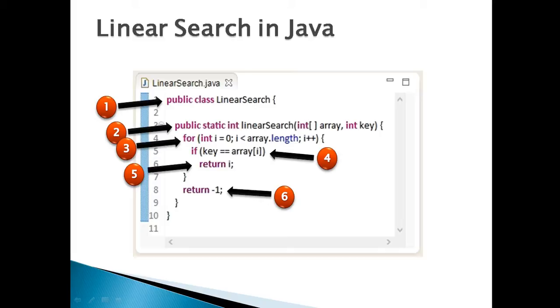Let's discuss Java code to perform linear search in steps. Step 1: Create a Java class. Here it is LinearSearch. Step 2: Create a static method, taking in an integer array and key to be searched in the array.